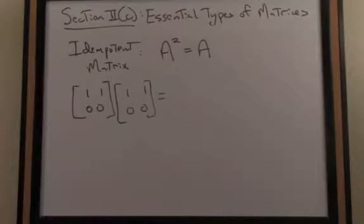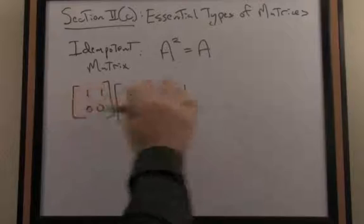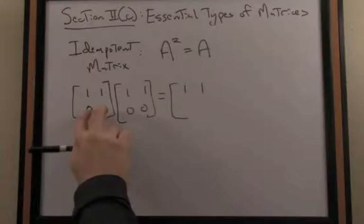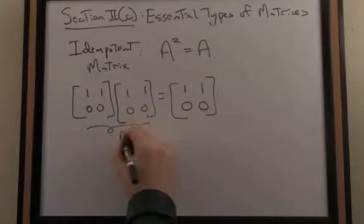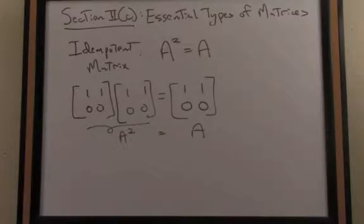We perform a sequence of dot products. 1, 1 dotted with 1, 0 results in a 1. 1, 1 dotted with 1, 0 again is 1. When I take the second row, 0, 0 dotted with anything is going to result in 0. Sure enough, we have A squared equals A for that particular matrix. So A there is idempotent.